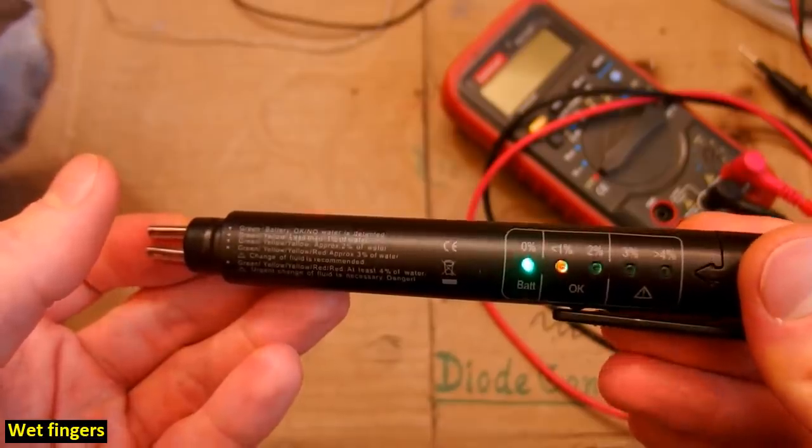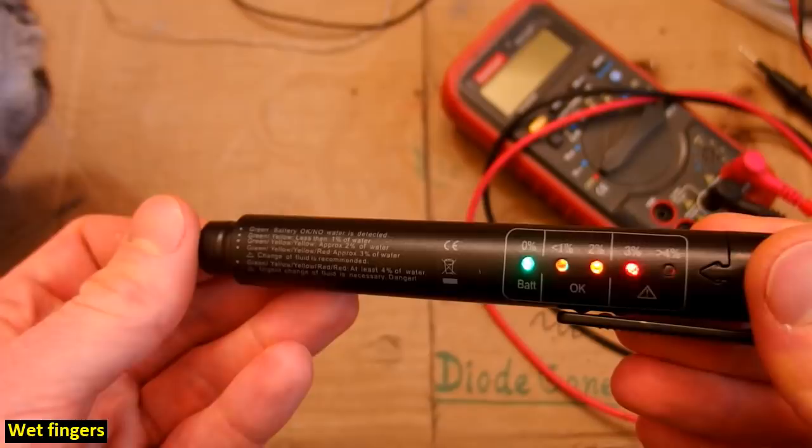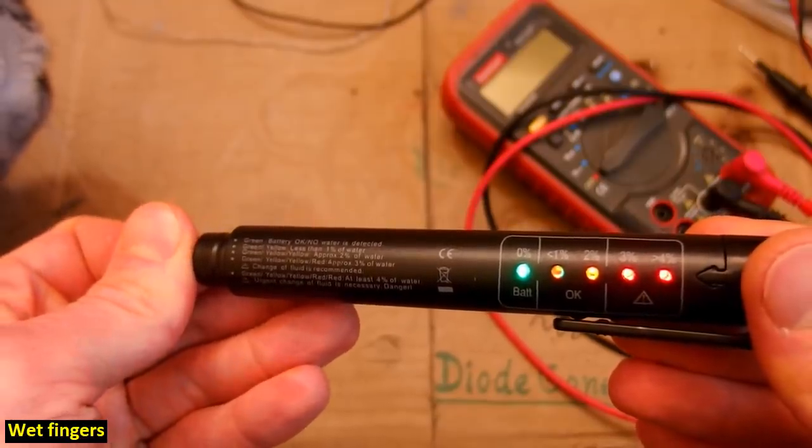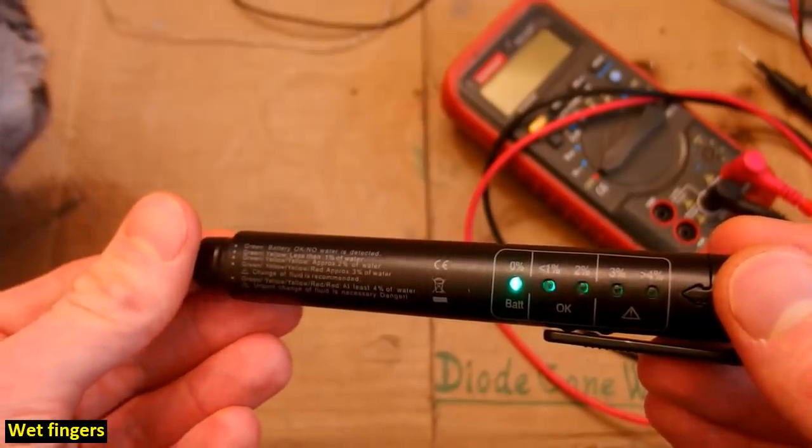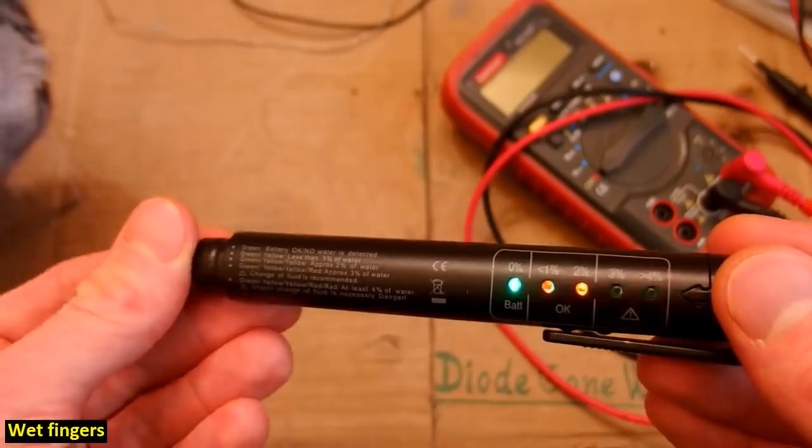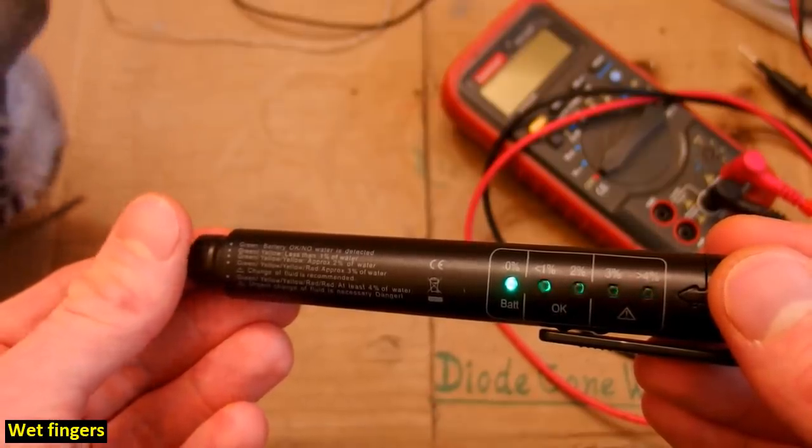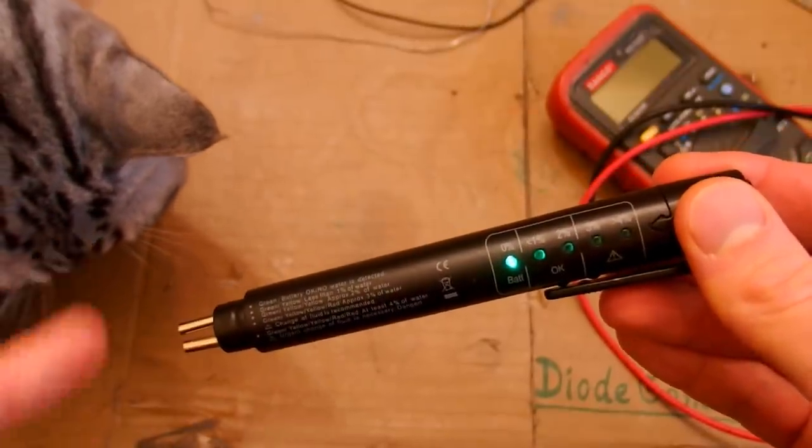Because this changes the resistance basically 1, 2, 3, 4, 5 LEDs. So it apparently indicates the resistance between the electrodes. It's basically a DC resistance meter. So it seems to work and of course here is my curious cat.